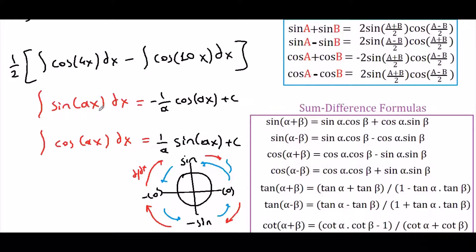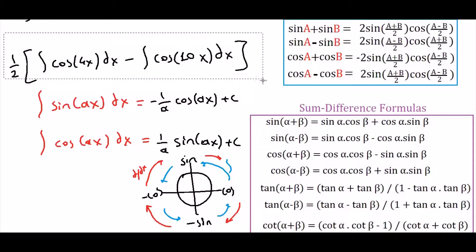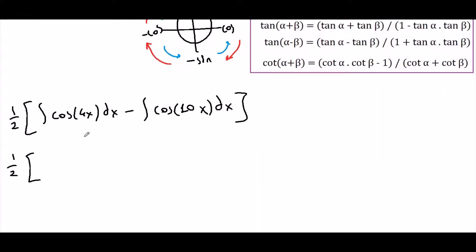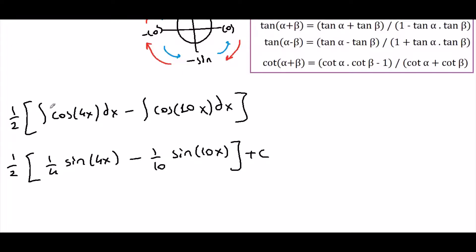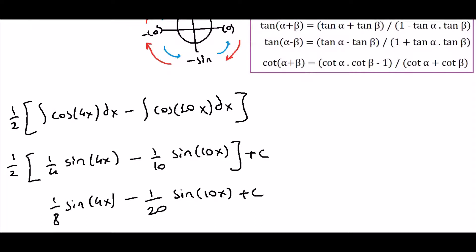Since we have argument ax, we multiply the integral by 1 over a. So in our case, the integral of cosine of 4x is 1/4 times sine of 4x, and the integral of cosine of 10x is 1/10 times sine of 10x. We can distribute and simplify: 1/2 times 1/4 is 1/8, giving us 1/8 sine of 4x minus 1/20 sine of 10x plus C. This is the answer.